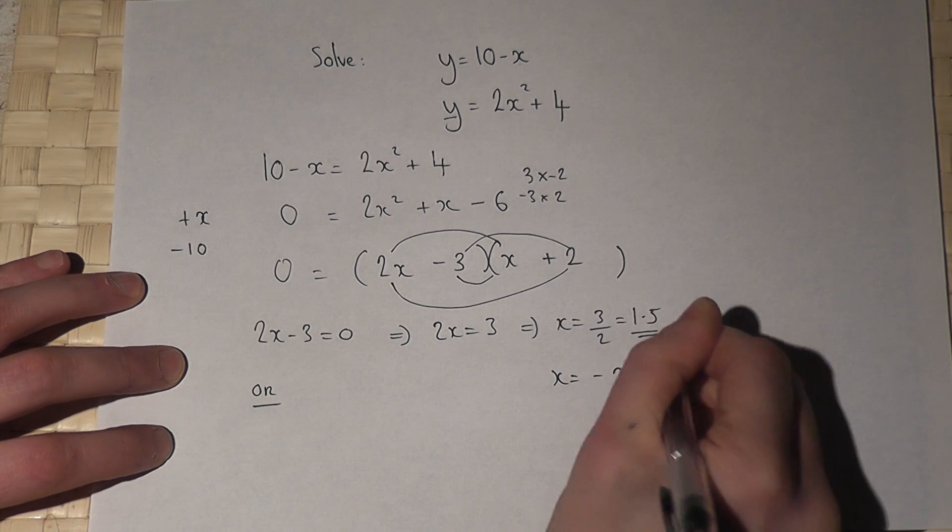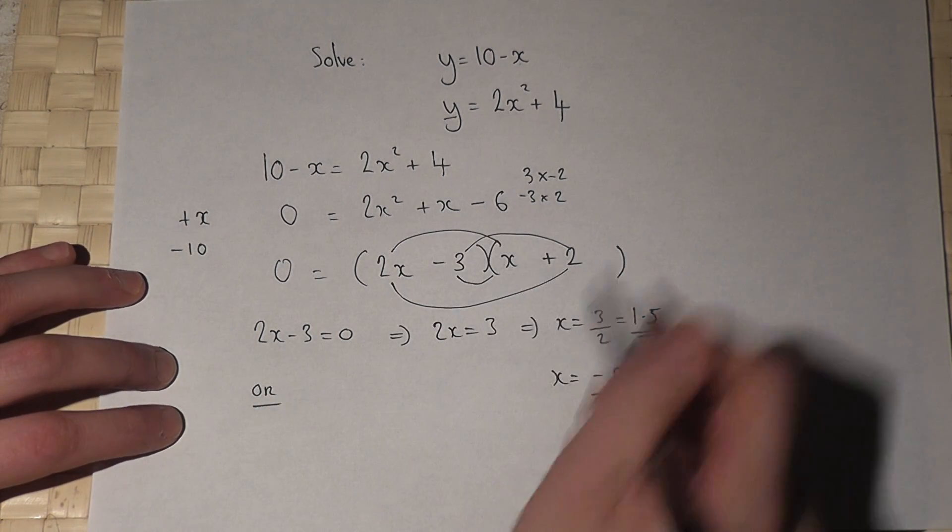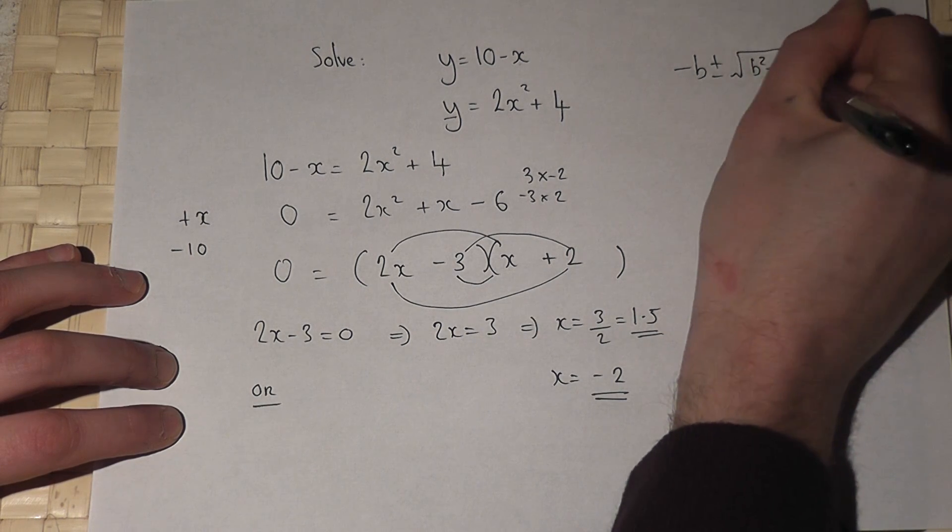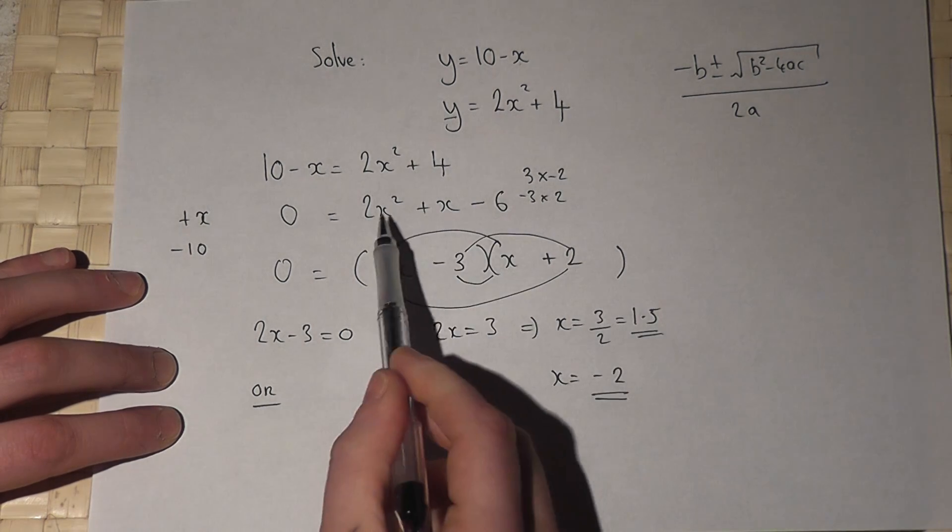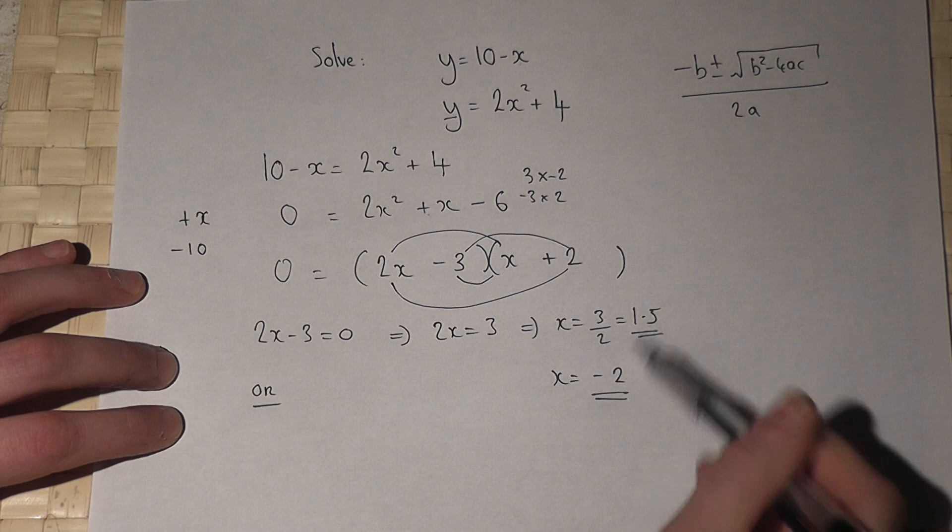If you don't want to factorize, then you could use the quadratic formula to solve that equation, where a is 2, b is 1, and c is minus 6. We get the same two solutions.